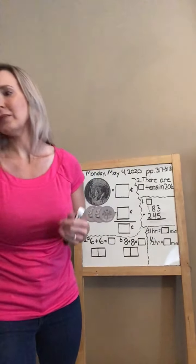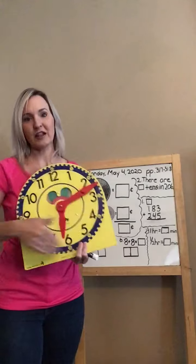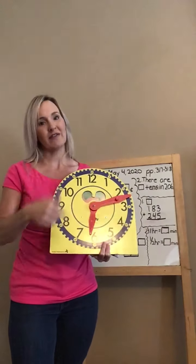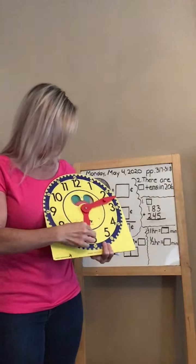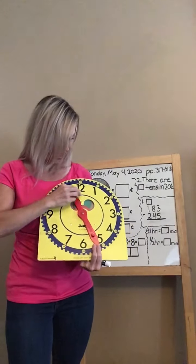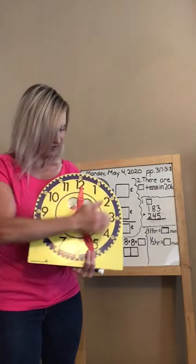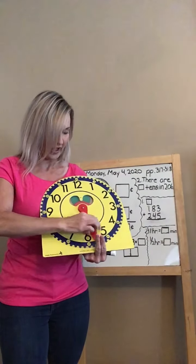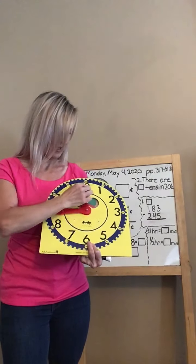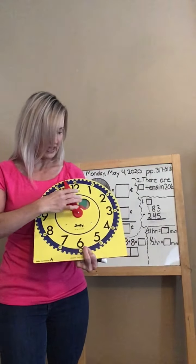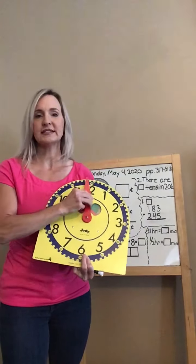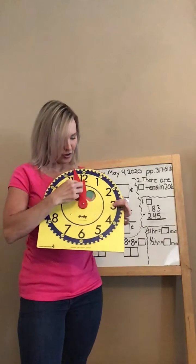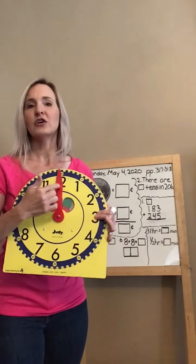I'm going to pull out my clock to help you remember. My clock is broken but it's all I have at home right now — remember the word resourceful. The hour hand is the short hand. I have 12 numbers on my clock, and the hour hand goes around twice in a day. How many hours are in a day? Yes — 24 hours.